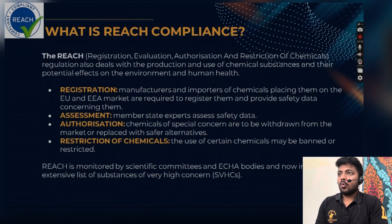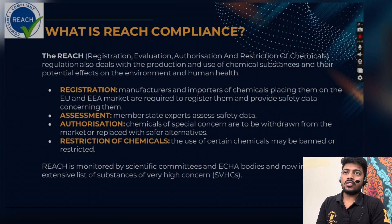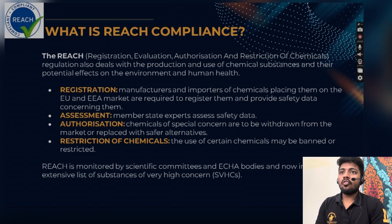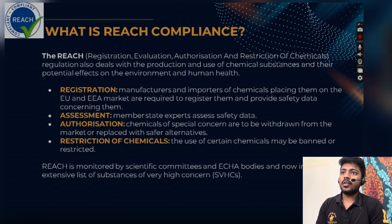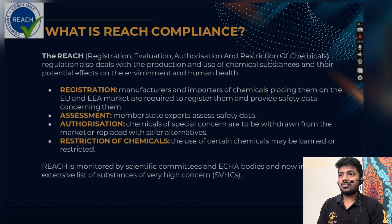REACH — Registration, Evaluation, Authorization, and Restriction of Chemicals — also deals with the production and use of chemical substances and their potential effects on the environment and human health. These REACH compliances address certain chemicals and substances which are harmful to the environment and human health.